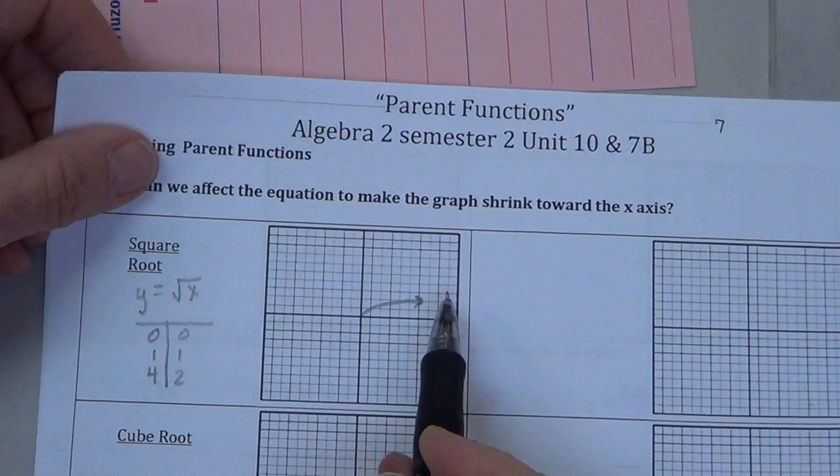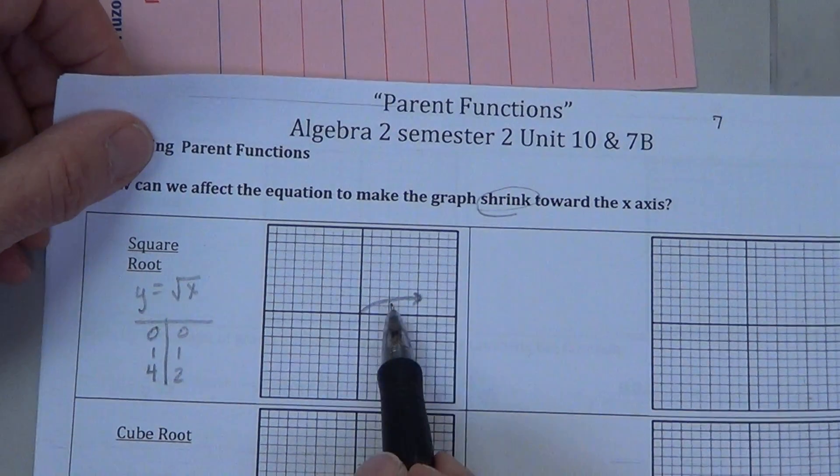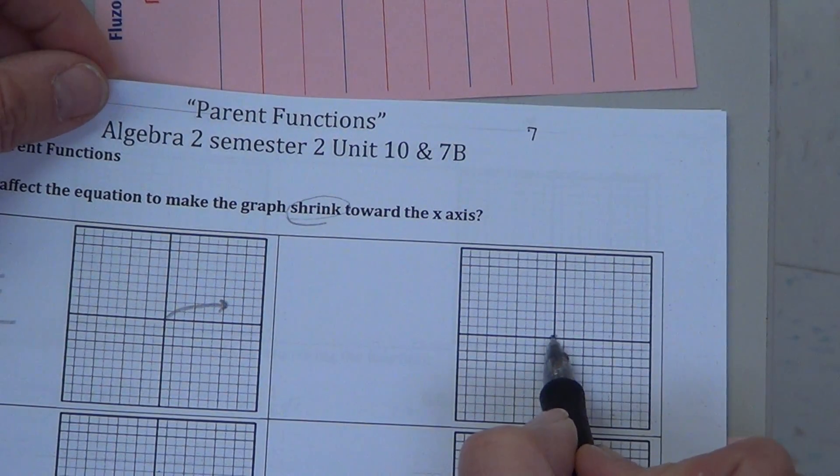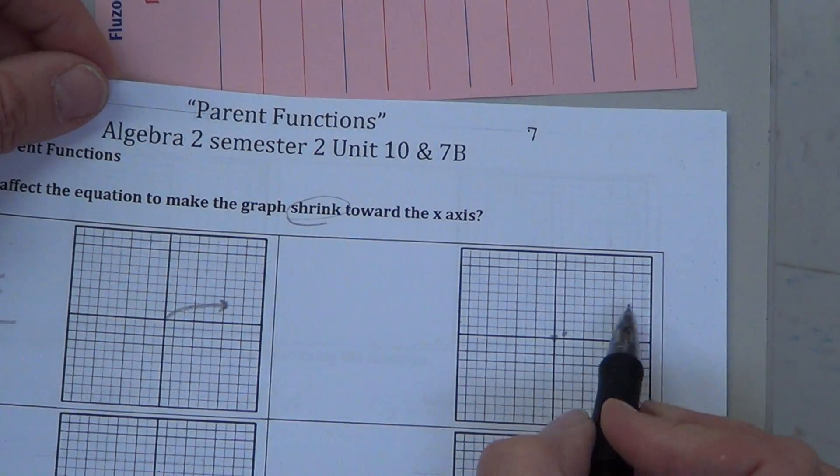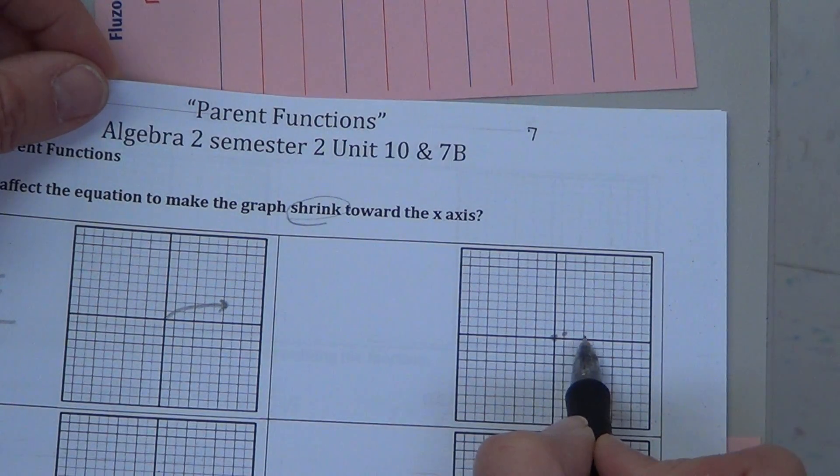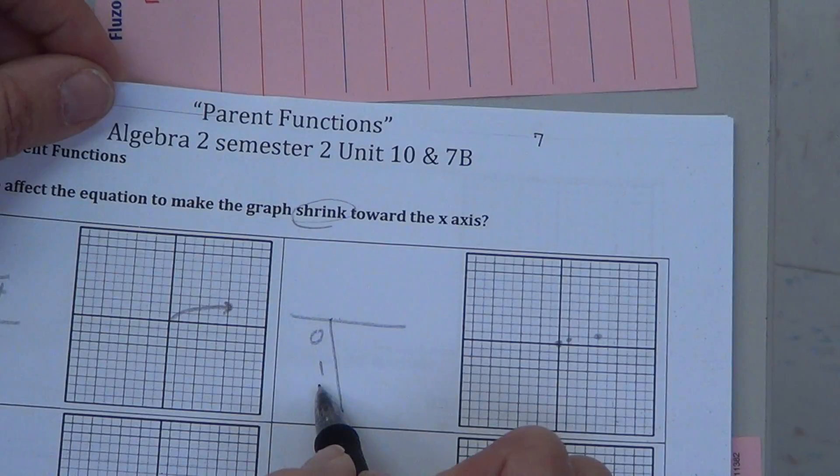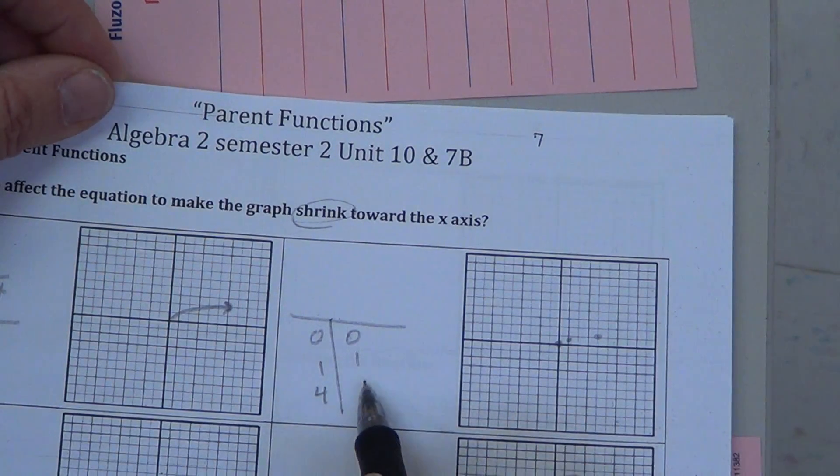So what we want to do this time, it says, how can we shrink this toward the x-axis? So let's make them half the height. Well, 0 is on the x-axis. You can't get any closer than that, but at (1, 1), we want to become (1, one half). And at 4, we want to become 1 instead of 2. We're going to cut them in half. So, originally, how we had 0, 1, and 4, and we had 0, 1, 2. We're saying, no,